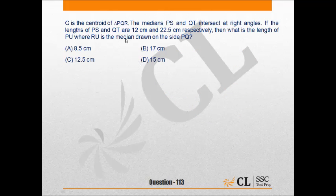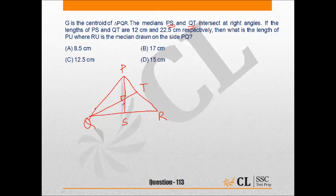G is the centroid of triangle PQR. It is a triangle P, Q, and R. The medians PS and QT. It is median PS and QT, okay? Intersected right angles, it is right angle. If the lengths of PS and QT are 12 cm, it means PS is 12 cm, so and this point is centroid, that is G. So length of PG would be 2/3 of 12 because centroid divides the median into 2 is to 1.